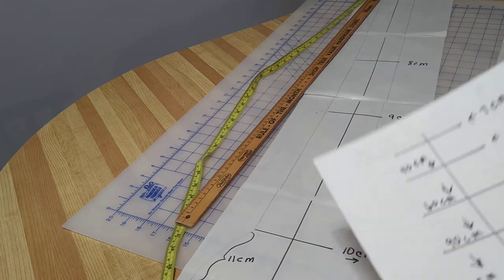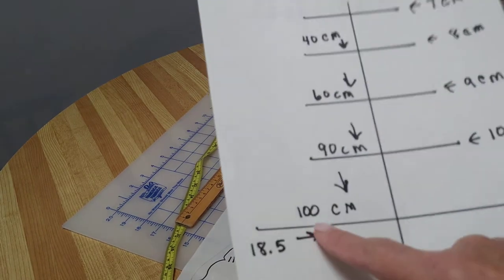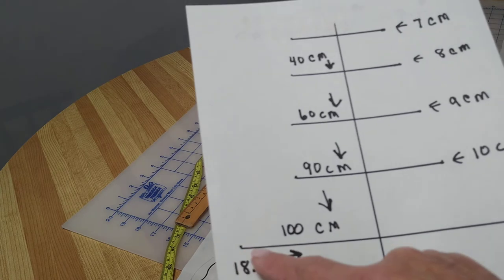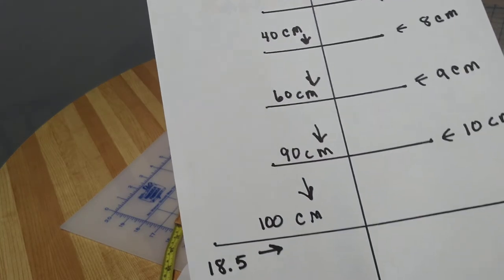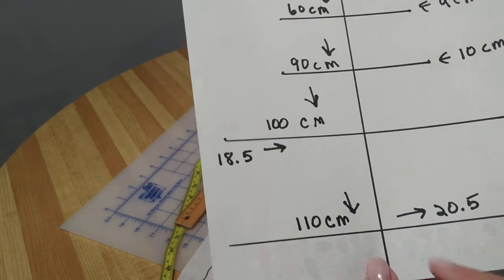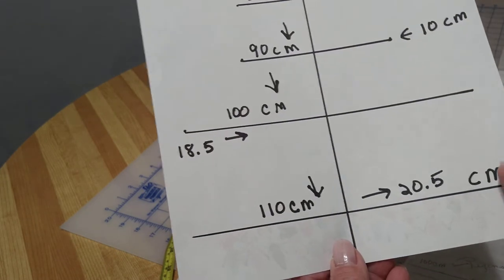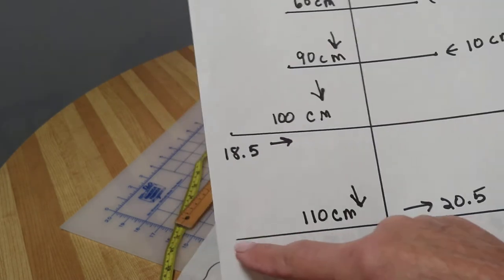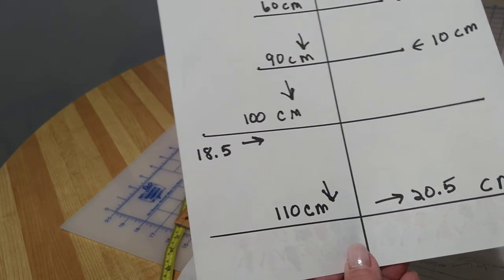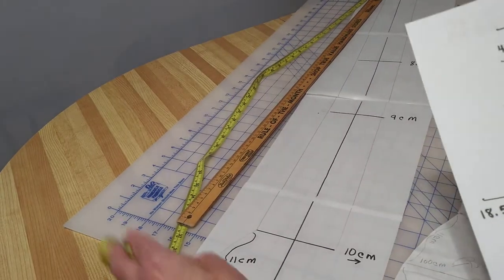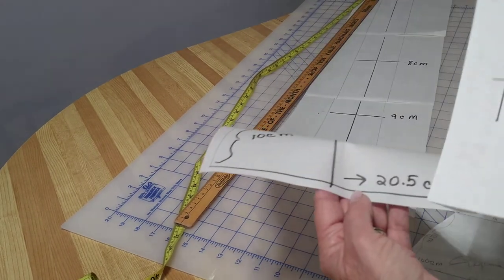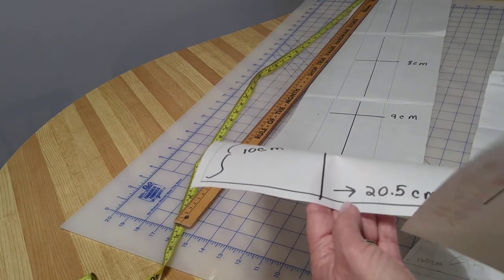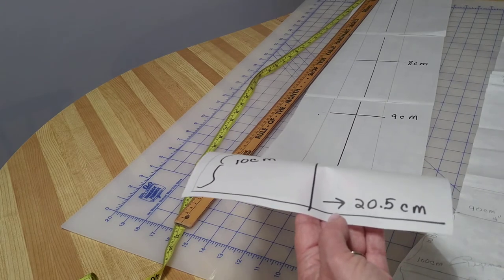So the next line will be 100 centimeters down, 18.5 centimeters across. On the bottom line, mark it at 20.5. Now I just put a line at the bottom here just so I would have a reference, but if you need to use the end of the paper, then do so.